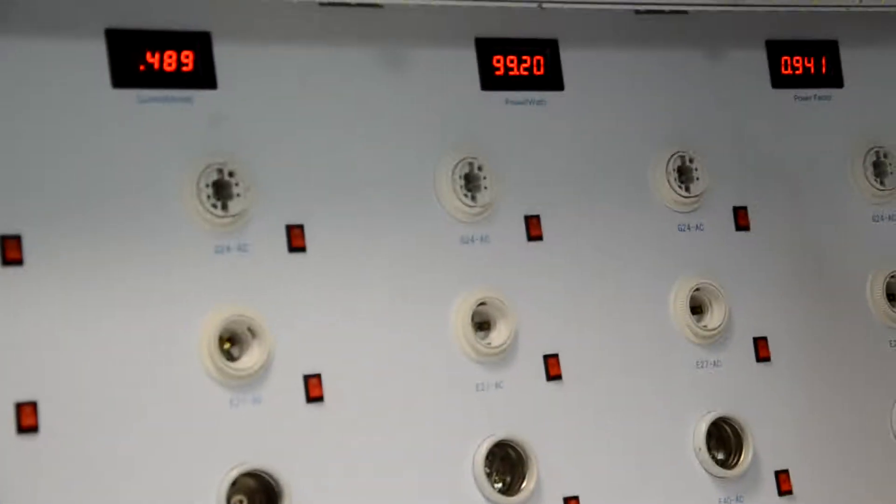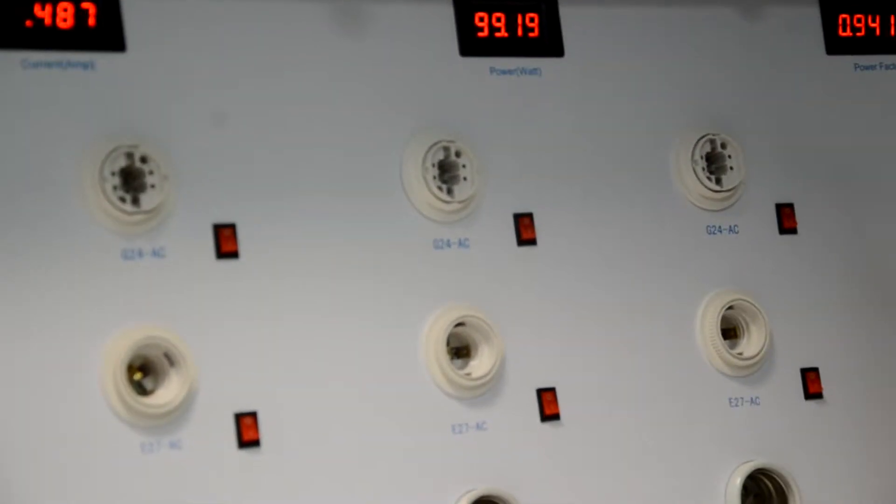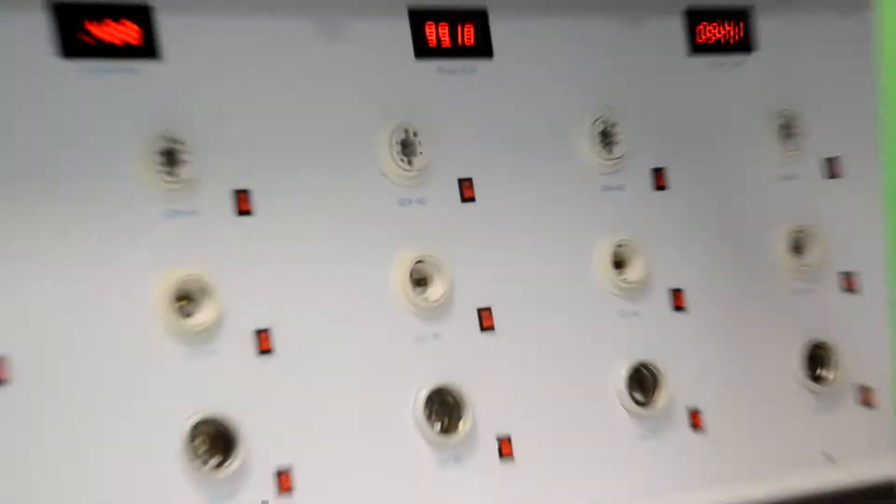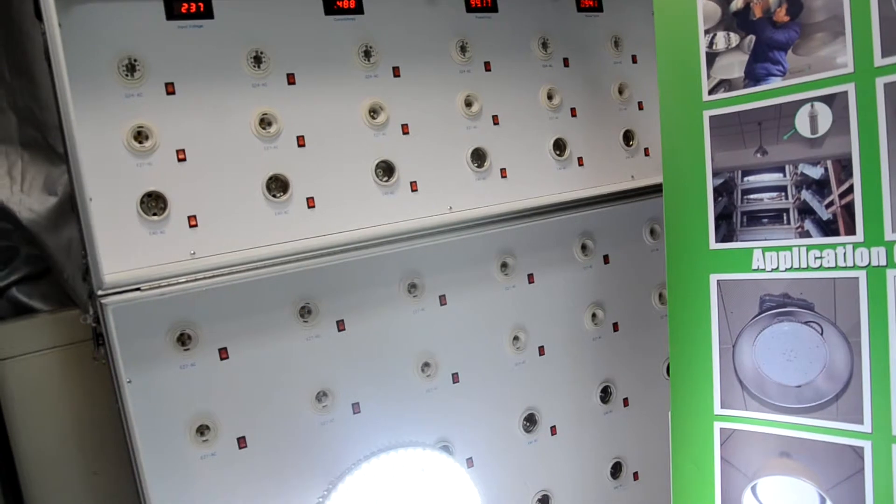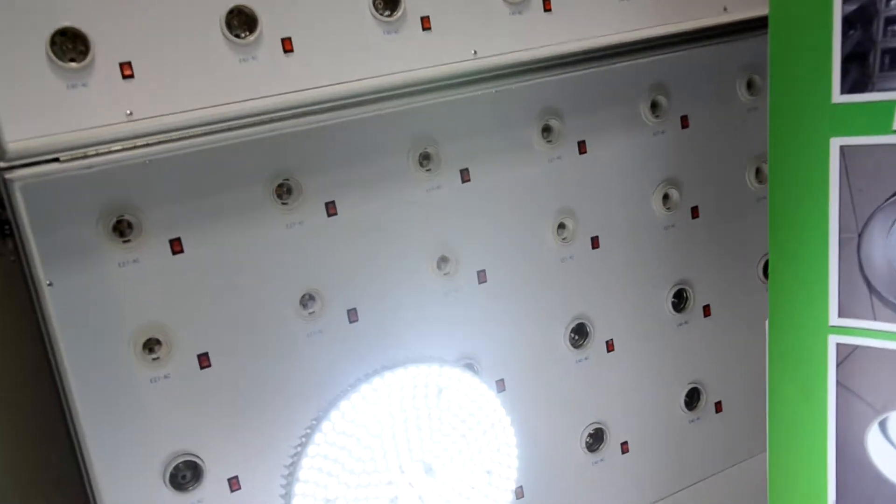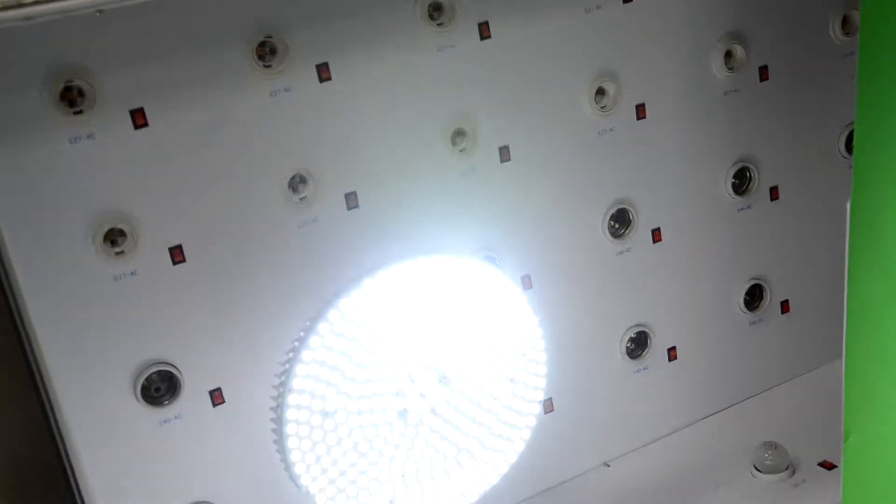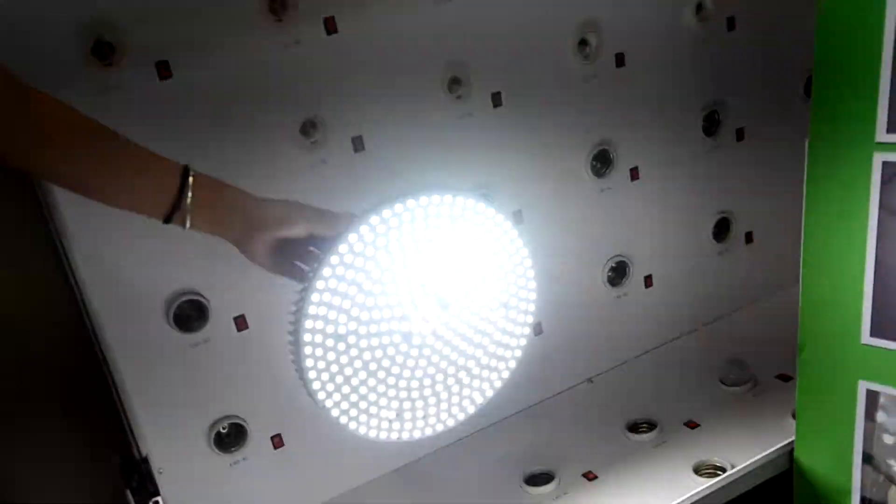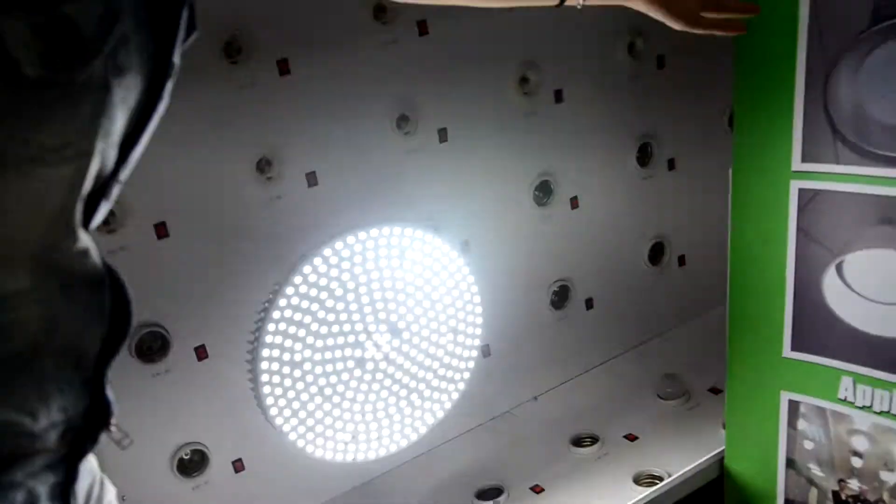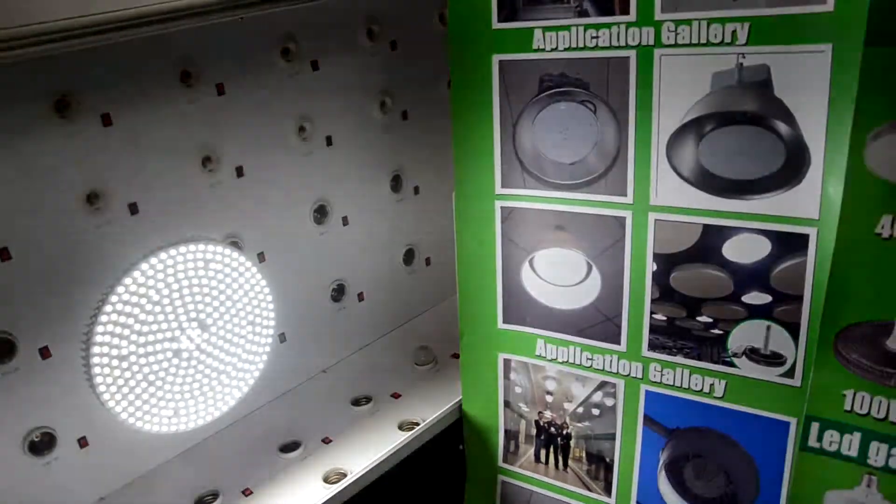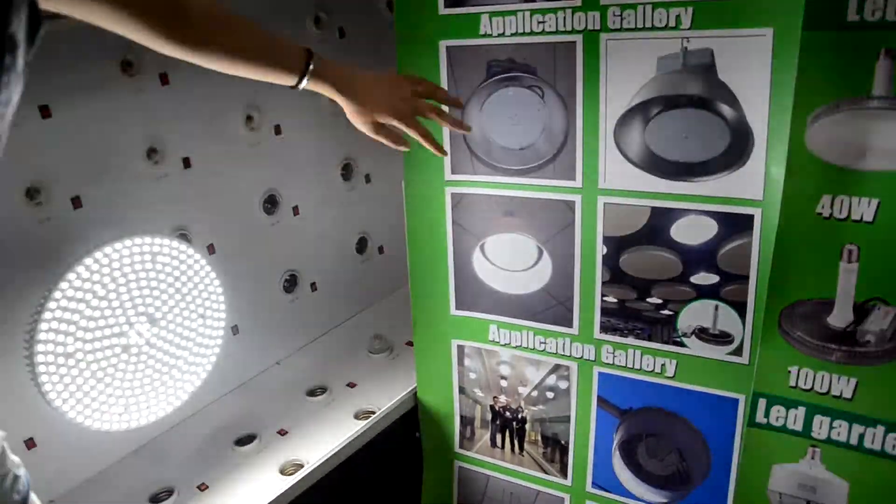For the 100 Watt high bay lamp, normally you can replace the 300 Watt high-pressure sodium and metal halide. Here you can see the application gallery. Normally it is applied in high bay fixtures.